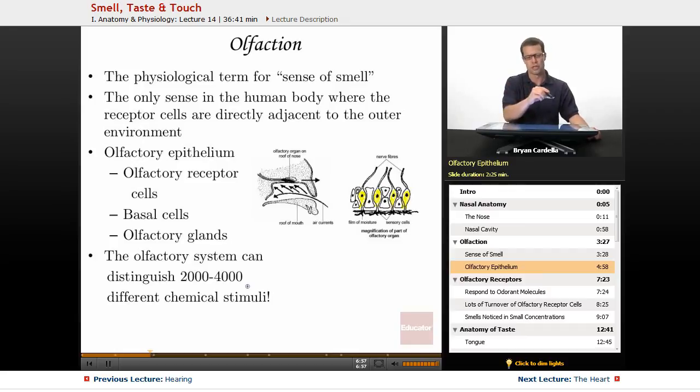Now if you sat down and wrote out a list of all the different odors that you remember smelling, like orange, lavender, etc., it would be hard to come up with a list of 2,000 to 4,000. We don't always consciously remember that we can smell these different things, but in terms of how the brain reacts to different stimuli, we found that there are thousands of different chemicals that affect your olfactory receptor cells just a little bit differently.